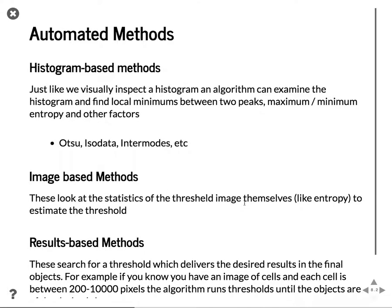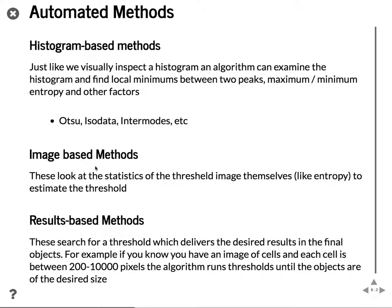For the automated methods there are three different approaches we can take. The first is this histogram-based approach where we look at the histogram and, like we did before, you see two peaks and try to pick a point between them. You can use finding local minimum, finding the two modes and taking the average, minimum and maximum entropy, or iterative methods — this is the OTSU, isodata, and intermodes class of techniques. The next group is image-based methods, which look at the statistics of the threshold images themselves, like entropy, to estimate the threshold.